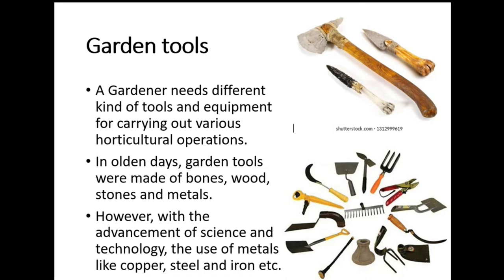In the olden days, garden tools were made of bones, wood, stones, and metals — you can see the top picture. These handles are actually made out of bones, and the tops use stones and metals. This is how they made their tools for gardening. With advancements in science and technology, we have replaced those with metals, copper, steel, and iron, and some handles are made of plastic or fiber.